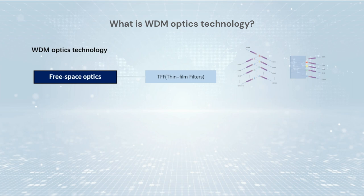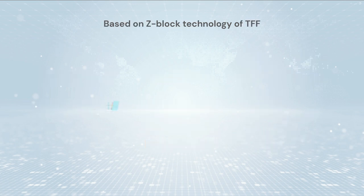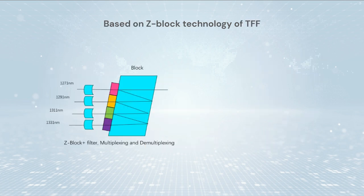There are two common main WDM technologies: TFF (thin film filter), based on free space optics, and AWG (arrayed waveguide grating), also known as EWG (echelle diffraction grating) or MZI (Mach-Zehnder interferometer), based on PLC (planar lightwave circuit).